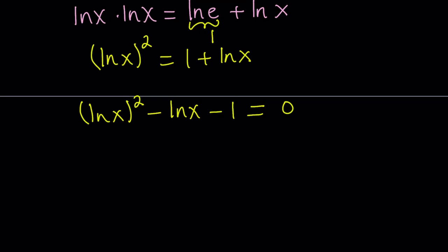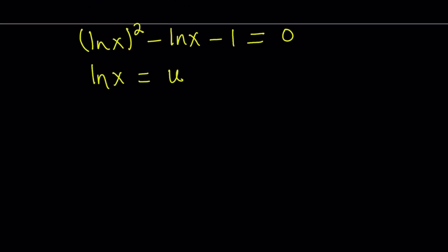Do you smell the golden ratio? You should. Now we're going to go ahead and replace ln x with u. And then this becomes u squared minus u minus 1 equals 0. So that's a quadratic in u. And its roots are u equals 1 plus minus square root of 5 divided by 2.